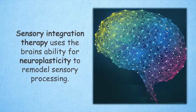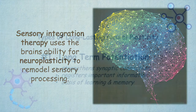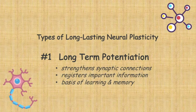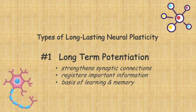Plasticity allows for connections between neurons, called synapses, to be modified to either increase or decrease in strength. One type of long-lasting synaptic plasticity is known as long-term potentiation, where patterns of frequent activation cause enduring increases in synaptic connection strength. It ensures that stimuli which are important are registered, forming the basis of learning and memory.